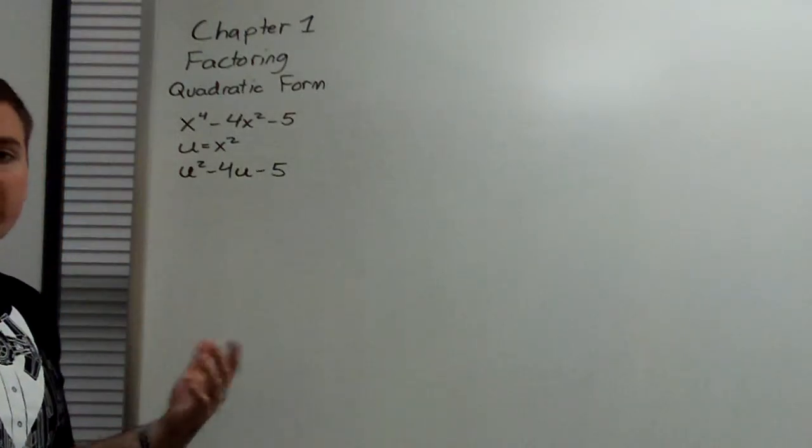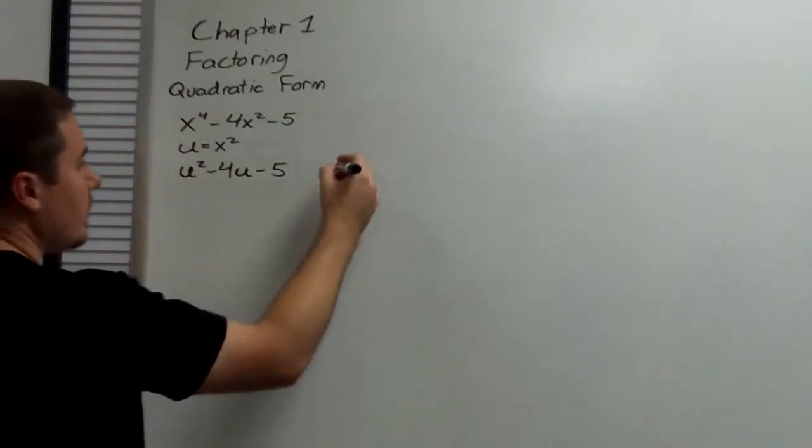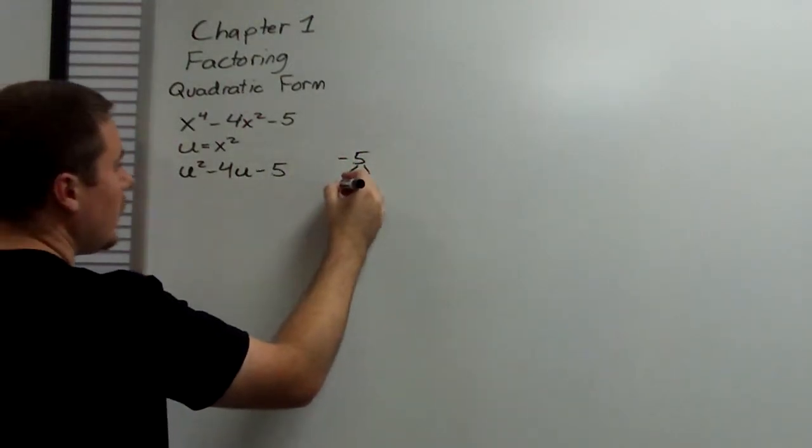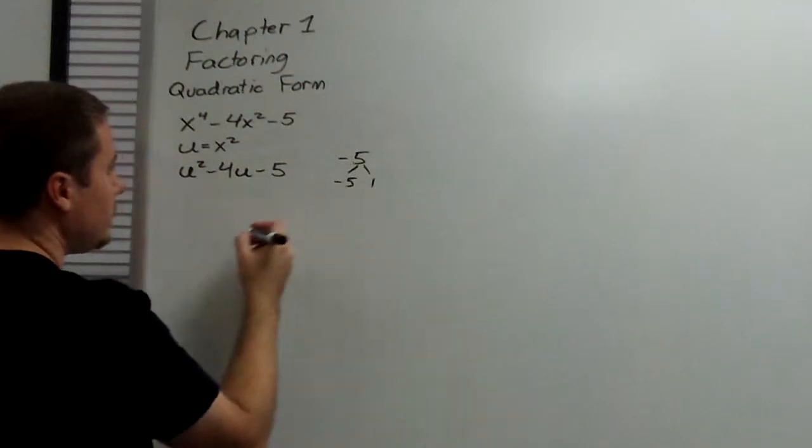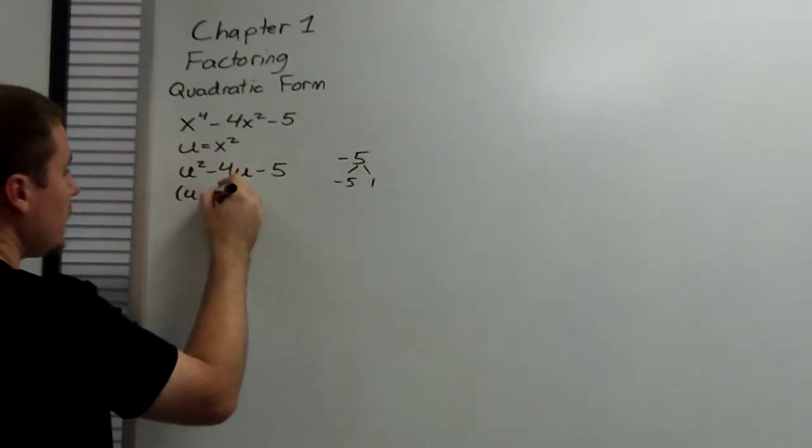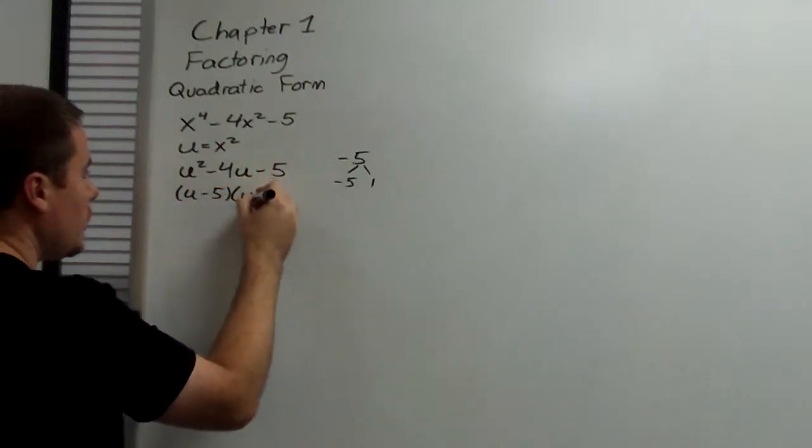Now, we have a very factorable quadratic. So, factors of negative 5 that combine to negative 4 are negative 5 and 1. So, we then have u minus 5 and u plus 1.